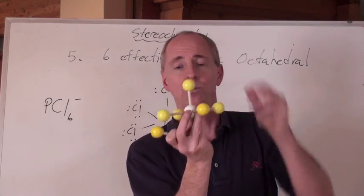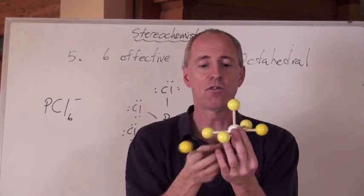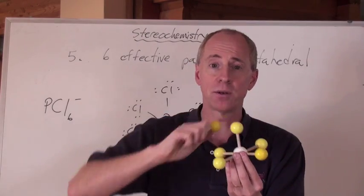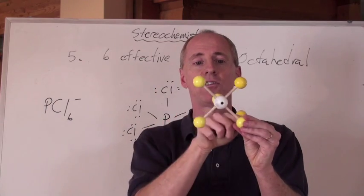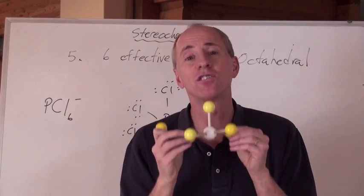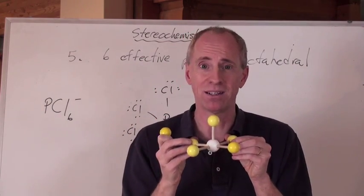And when you do that, well, what do you get? You actually get a four-sided pyramid here, right? But the base of that pyramid would be square. So it's called square pyramidal. Does that make sense? That's what it would be, square pyramidal.